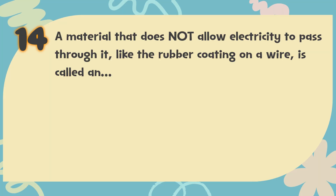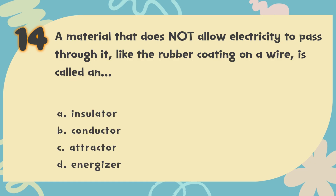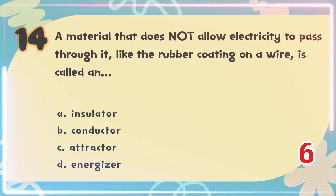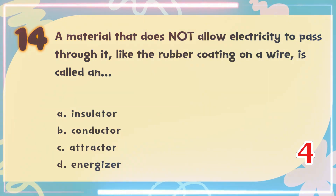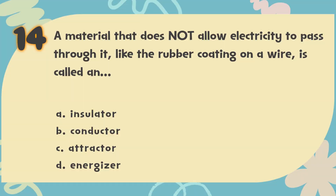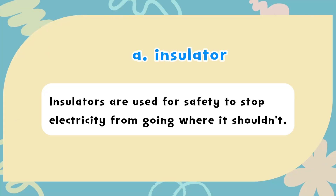Number 14: A material that does not allow electricity to pass through it, like the rubber coating on a wire, is called an — A. Insulator, B. Conductor, C. Attractor, D. Energizer. The correct answer is A. Insulator. Insulators are used for safety to stop electricity from going where it shouldn't.